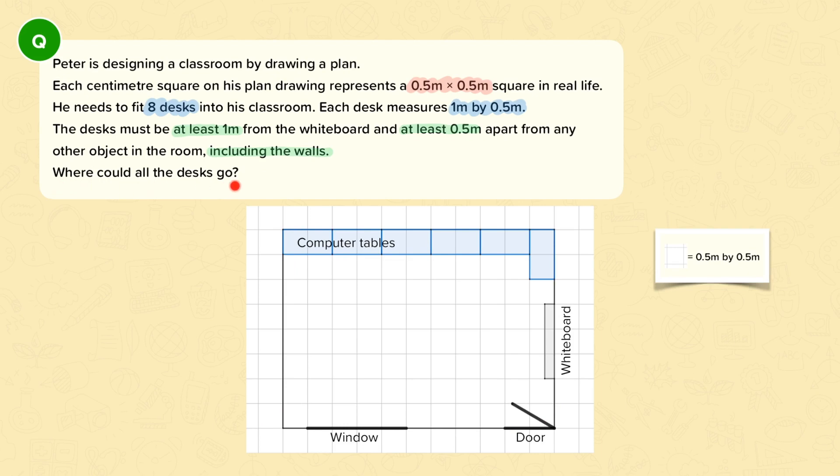And then we're asked where could all the desks go. Notice in the question they say where could all the desks go, not where must all the desks go. So where could the desks go implies that there are multiple ways of doing this correctly. As long as all of these things are true, then you'll have a correct diagram.